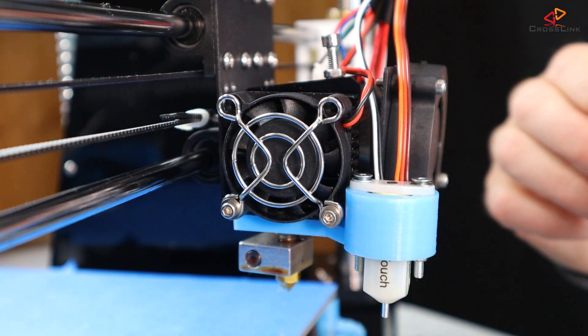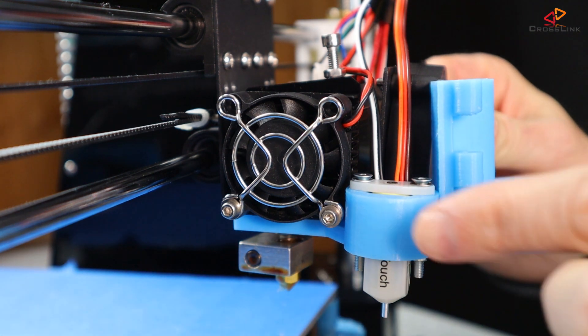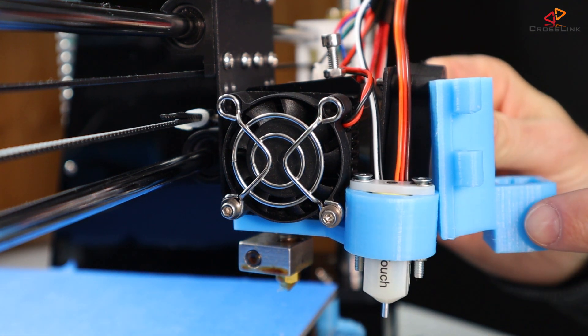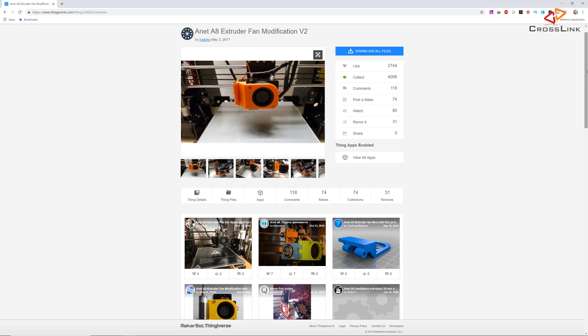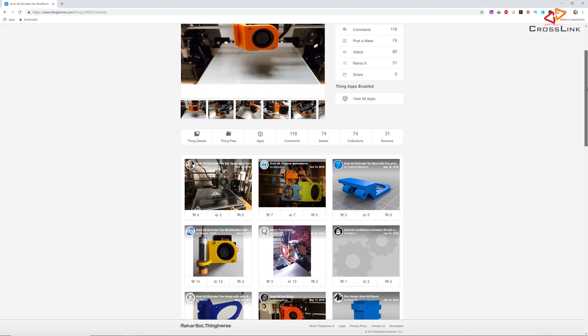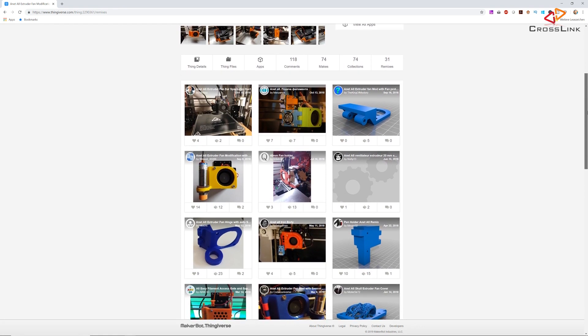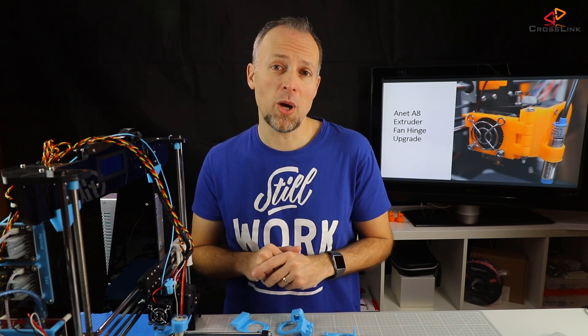You can see here that the current position of the sensor will interfere with the new fan hinge, so it will have to be moved to the front. Also check out the remixes of the original fan hinge mod to find the one that fits your bed leveling sensor and get in touch using the comment section if you have questions about that.